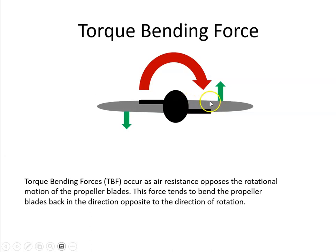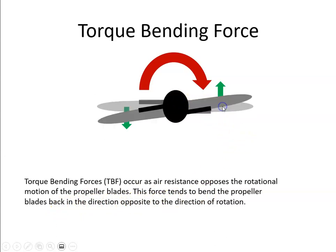This torque is going to cause the propeller to bend back in the opposite direction to which it is rotating. The torque bending force opposes the rotational motion of the propeller blades — instead of the blades being straight, they bend back in the opposite direction. So that's the thrust bending moment and the torque bending force.